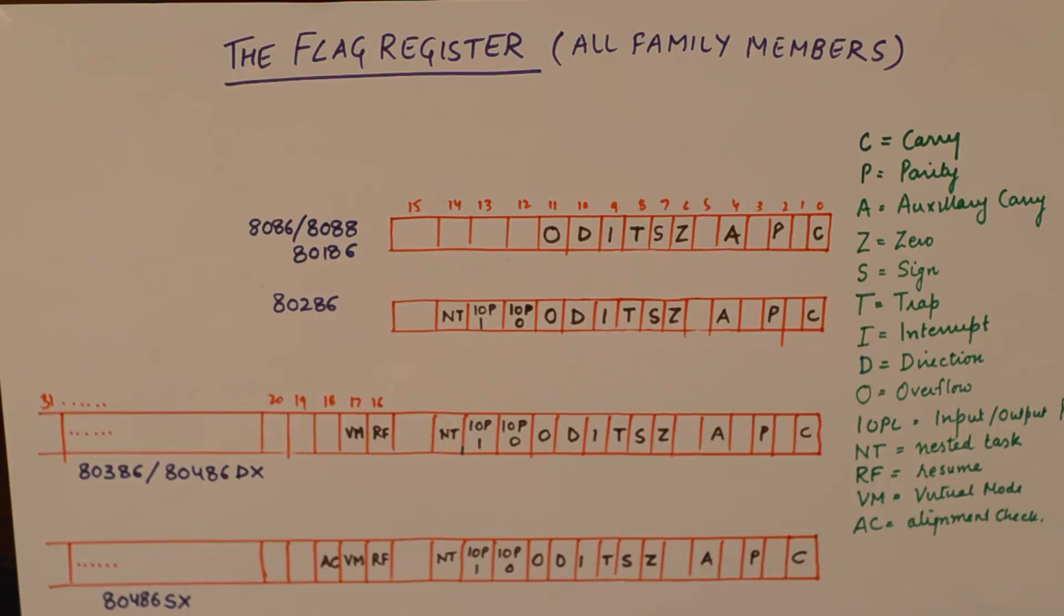In this video I wish to compare the flag registers of all the family members ranging from 8086 to Intel. The reason why I am doing this is the fact that there is an interesting correlation between the designing of the flag registers as we design more intricate microprocessors, and the second reason is that if we study the basic microprocessors well then it does not become difficult to understand more complicated microprocessors because the flag registers are upward compatible.